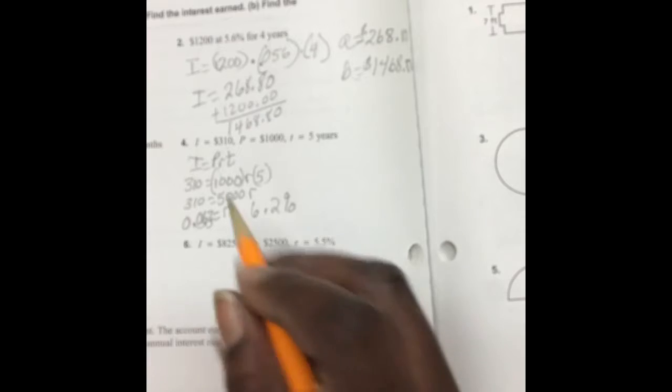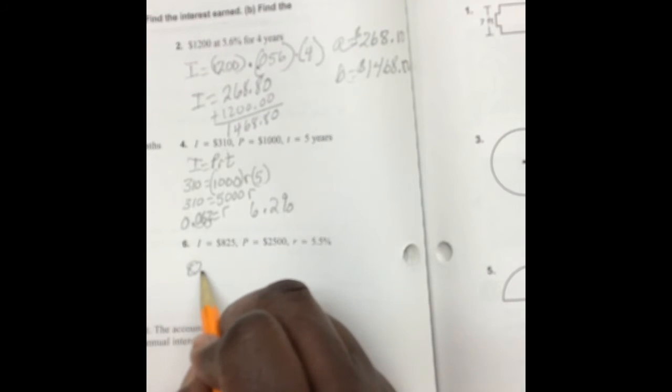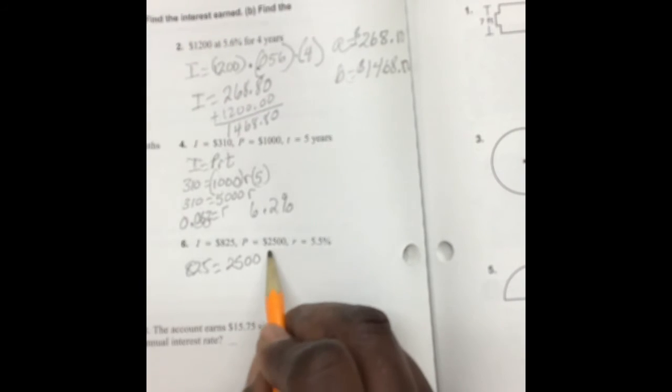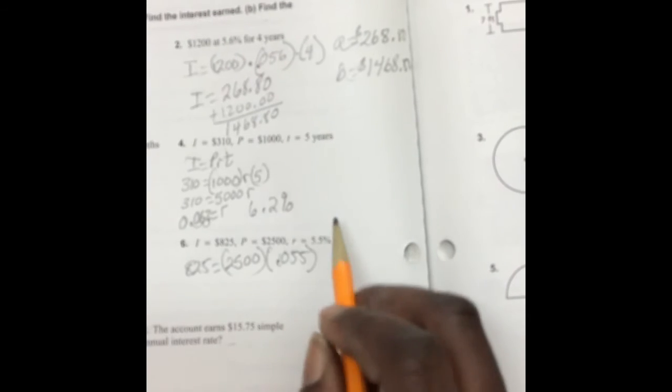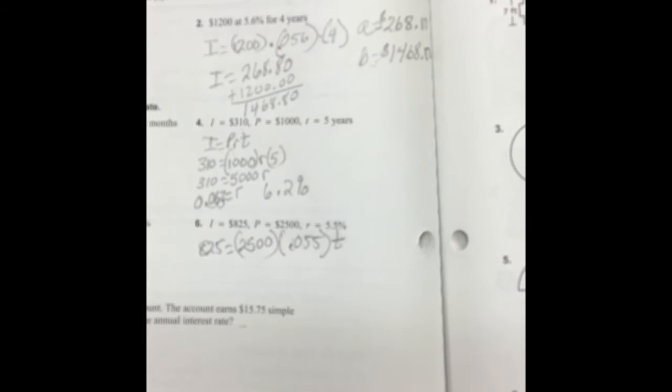Let's look at 6. Number 6 says find the amount of time. So once again, our I is equal to our P times our R times T. So let's multiply.